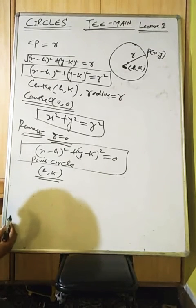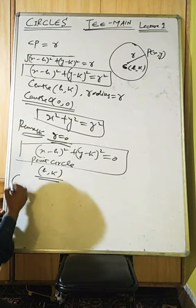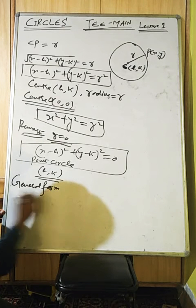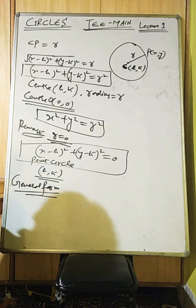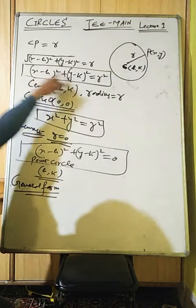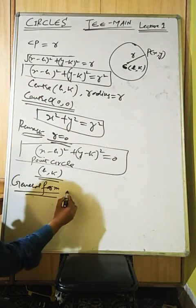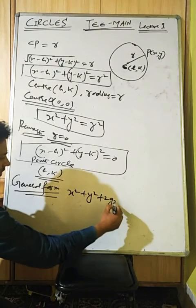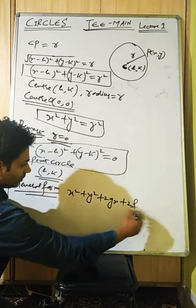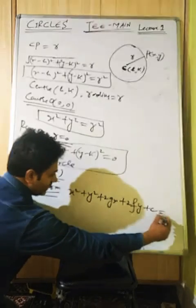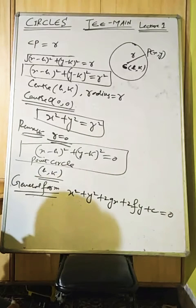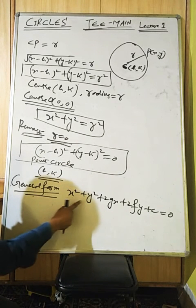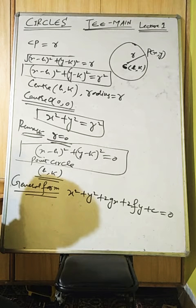This is called the point circle. Now we find the general form. The general form is: x² + y² + 2gx + 2fy + c = 0. Here x² and y² have equal coefficients and there is no term containing xy.